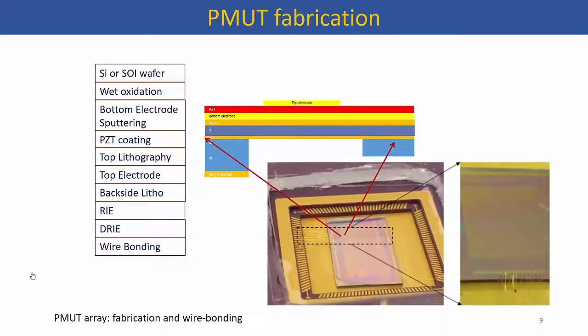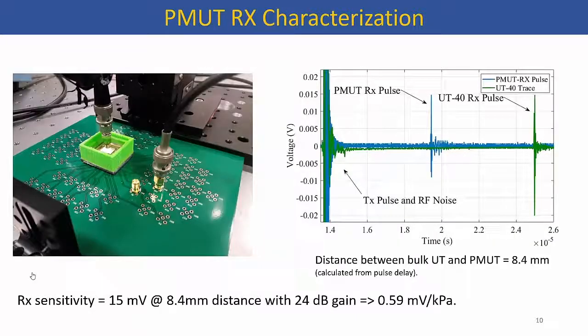The finished device looks something like this. It is integrated and wire bonded on a pin grid array. As you can see, we haven't been able to wire bond all the way and are still facing some troubles. We were also limited in the number of channels we could acquire in parallel, so going ahead I'll show that we made do with just one element to get some imaging done.